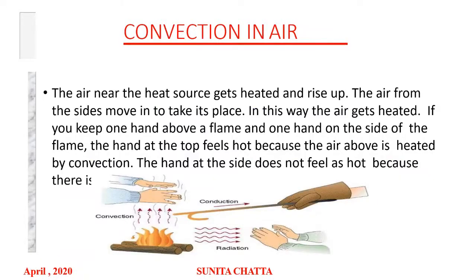Convection in air — how it takes place in air. The air near the heat source gets heated and rises up. The air from the other side moves in to take its place. In this way air gets heated. If you keep one hand above a flame and one hand on the side of the flame, the hand at the top of the flame feels hot because the air above is heated by convection. The hand at the side does not feel hot because there is no convection.